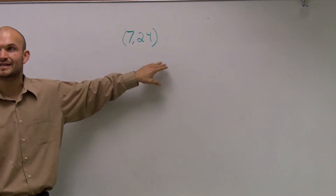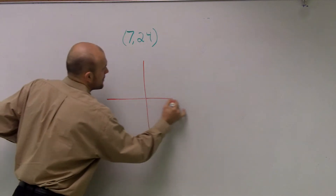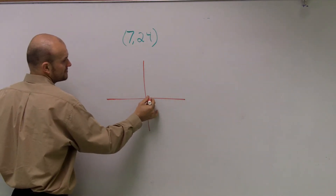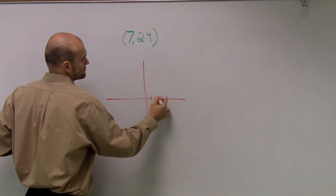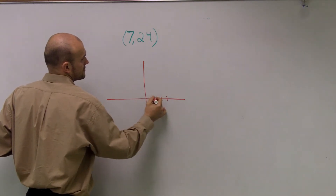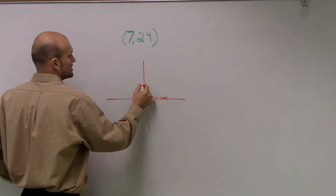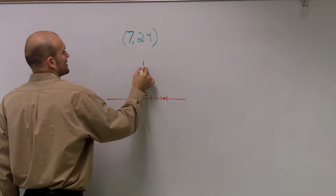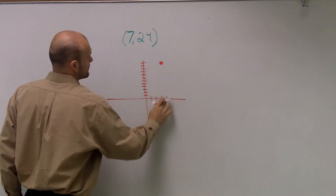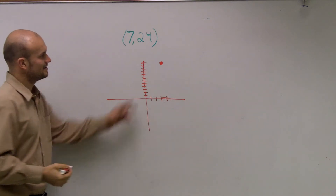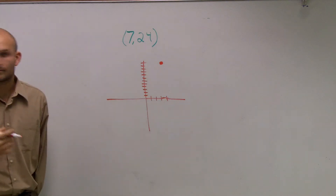The reason is the unit circle has a radius of 1. If I draw this point — going up 24 and over 7 — my radius is going to be larger than 1.